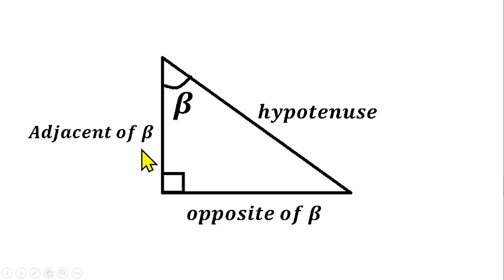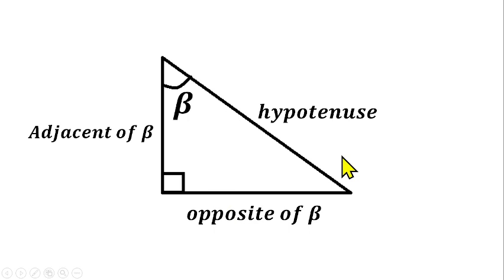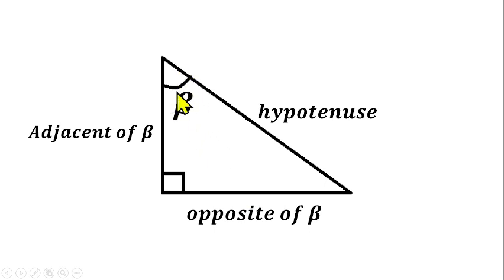Looking at another triangle with angle beta: the adjacent of angle beta is this side, the opposite of angle beta is this other side, and this remains the hypotenuse. In summary, anytime you are given a right-angle triangle and working on trigonometric ratio, you should first identify the hypotenuse, then identify the opposite of the given angle, and then identify the adjacent of the given angle.